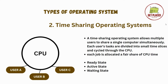For example, consider a time sharing system with multiple users as shown in the figure: user A, user B, and user C. User A is editing a document. User B is running some software update. User C is browsing the internet. So the CPU here allocates small time slices to each task.